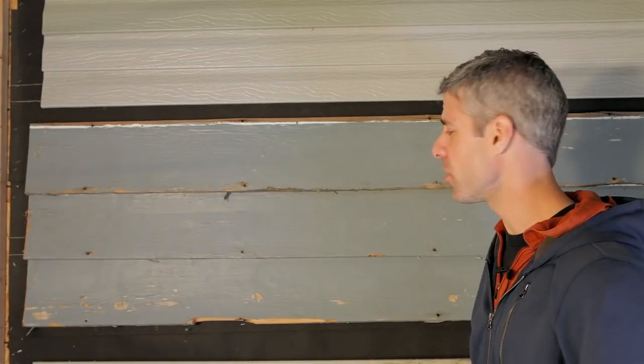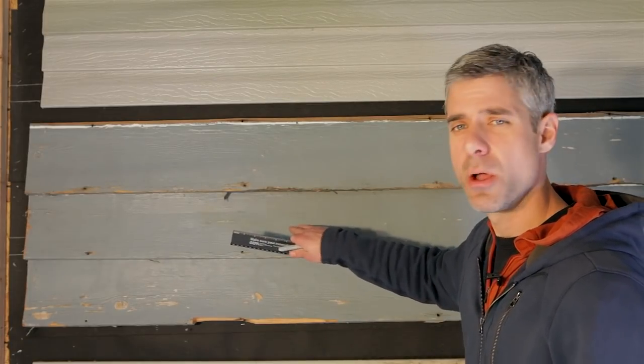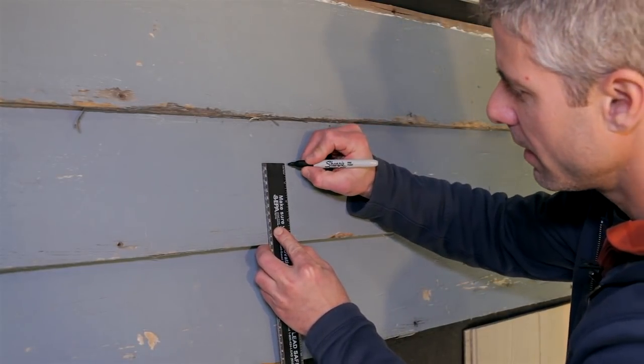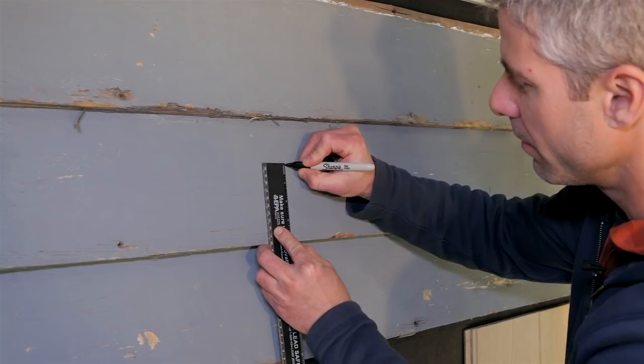Your first step is to measure the area you're going to sample. Most laboratories will require a one inch by one inch square, so we'll go ahead and do that. It's important to measure accurately and then record that measurement on your form.